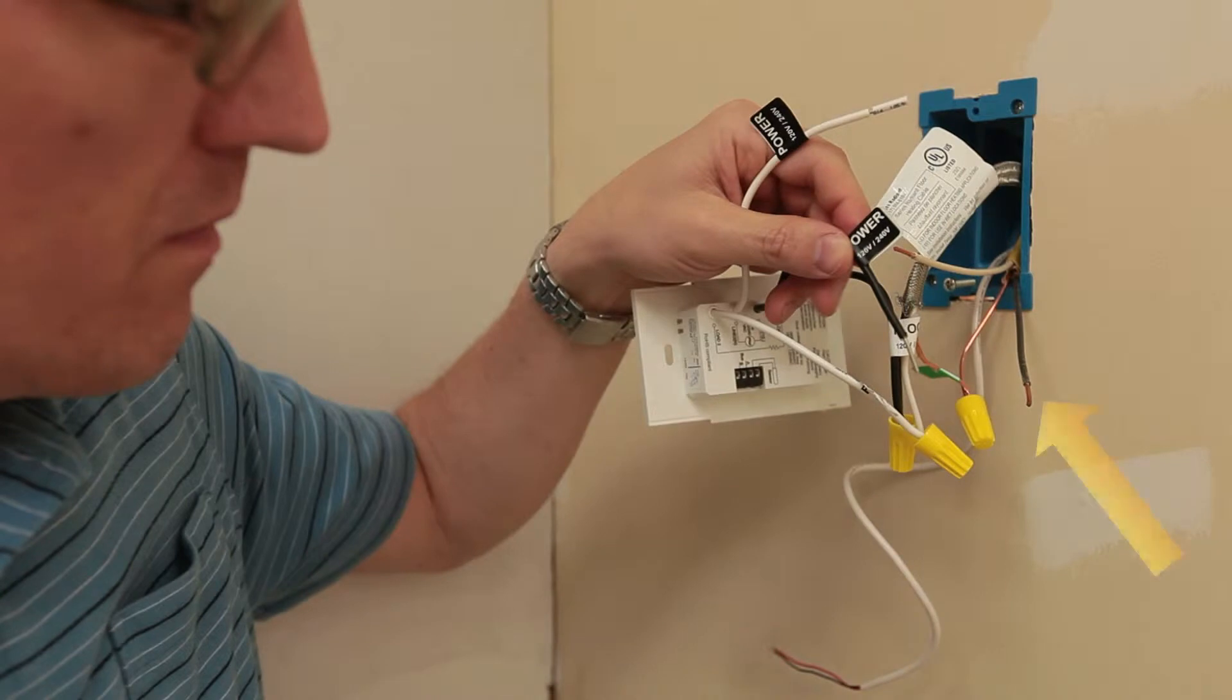Next, connect the black line voltage wire from the electrical supply to the black line wire on the back of the SunStat.